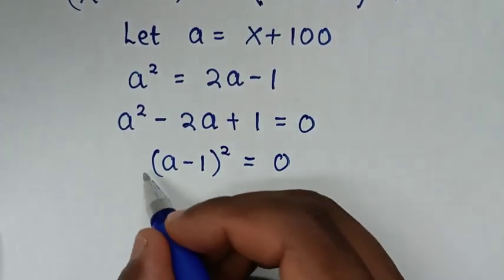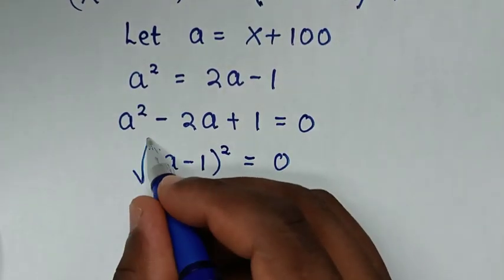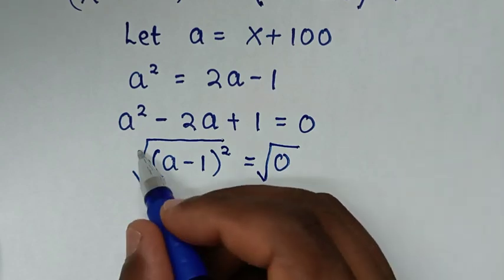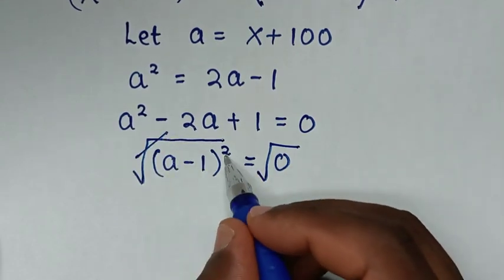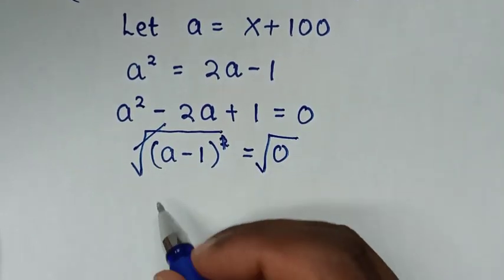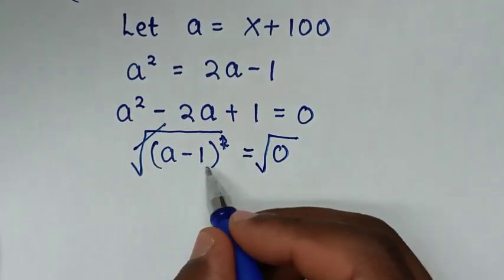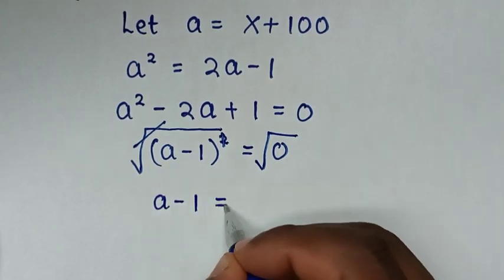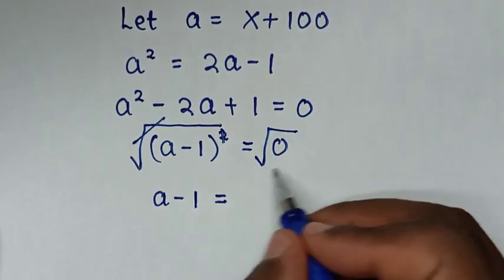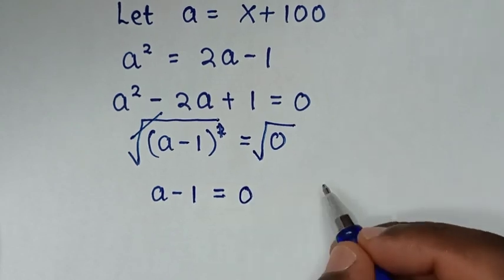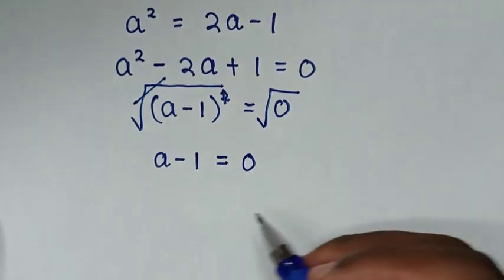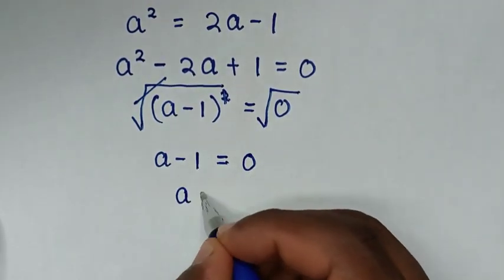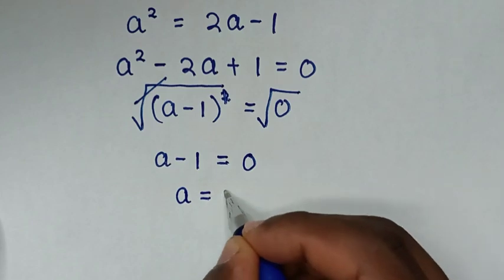We apply square root to both sides, so the square cancels and we get a - 1 = 0. Taking -1 to the right side gives a = 1.